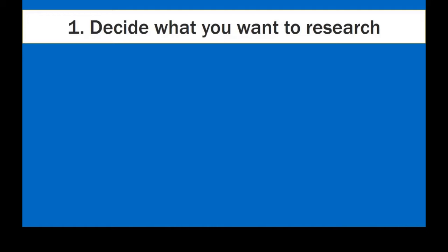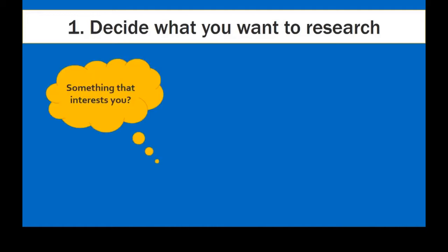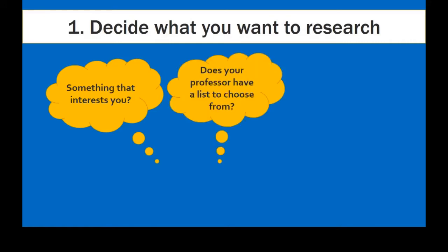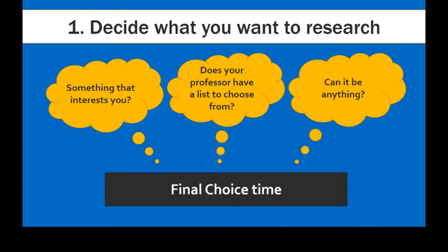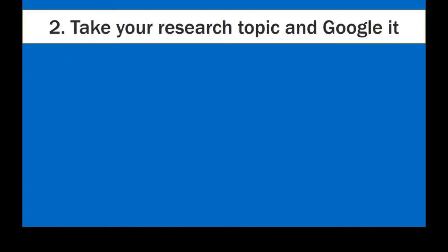Deciding what to research can be easy or hard depending on the assignment given to you by your professor. Are you allowed to do something that interests you or something based on your major? Does your professor have a list to choose from, or can it be anything you like? Pause the video here to think about what you want to research, and hit play when you're ready to move on. You have an idea for what you want to research. You might stick with this topic or change your mind and discover something new to research, and that's okay, so long as your professor approves your final choice.